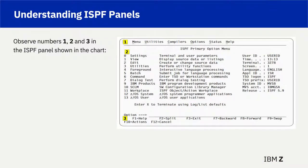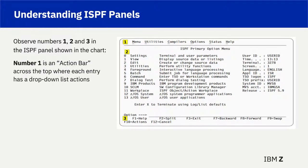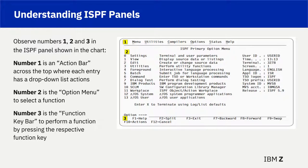Observe numbers 1, 2, and 3 in the ISPF panel shown in the chart. Number 1 is an action bar across the top where each entry has a drop-down list of actions. Number 2 is the option menu to select a function. Number 3 is the function key bar to perform a function by pressing the respective function key.